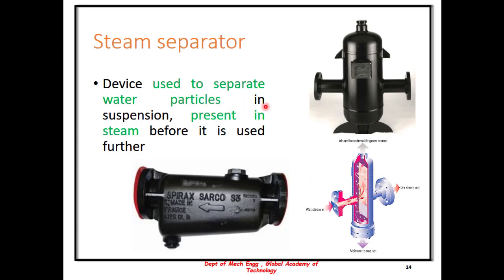A steam separator is basically a device used to separate steam from the water particles in the steam. These water particles are usually suspended in the steam and this needs to be separated before it is used further. When this steam is passed through the set of tubes, there could be a tendency for the temperature to reduce and thus some water particles being suspended in the steam. In order to separate this, a steam separator is useful.